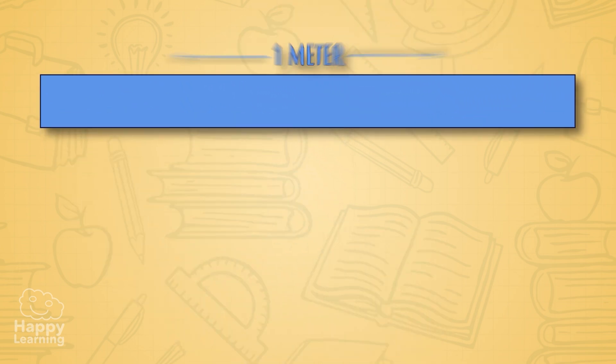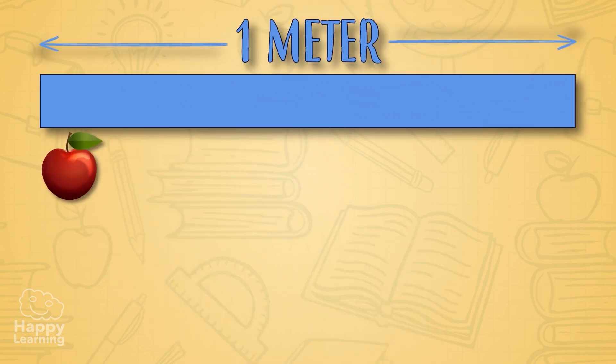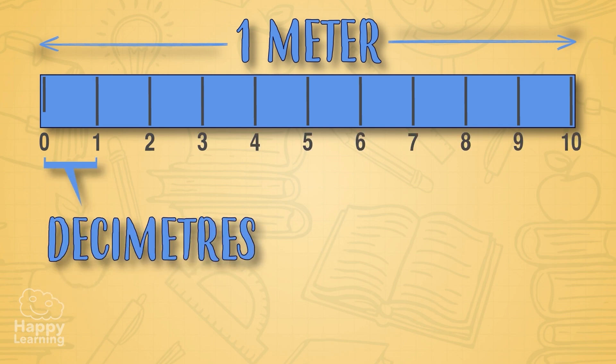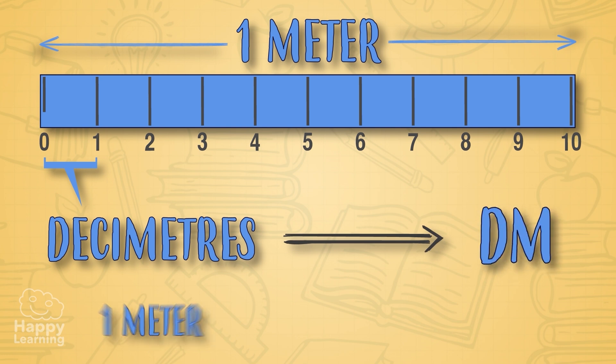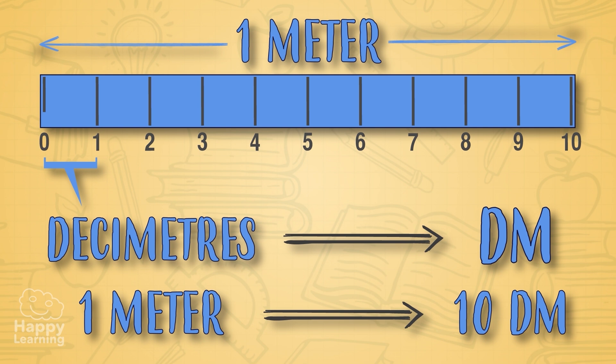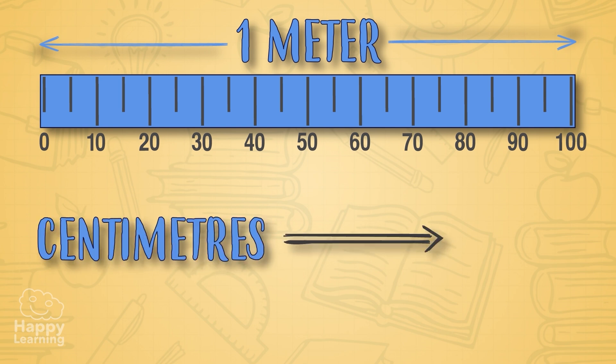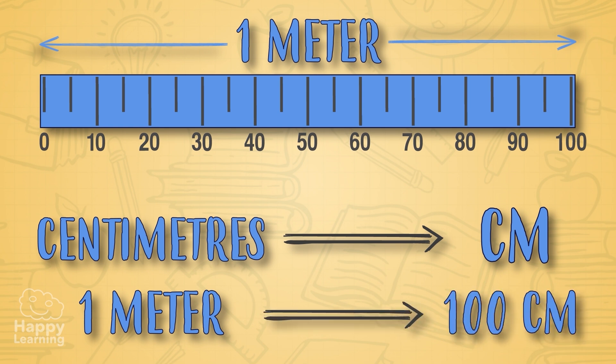But what happens if what we want to measure is smaller than a meter? We need to divide the meter in equal small parts. If we divide a meter in 10 equal parts, we call each of these a decimeter, represented with the letters dm. A meter has 10 decimeters. If we divide it in 100 equal parts, we call these centimeters, represented with the letters cm. A meter has 100 centimeters.